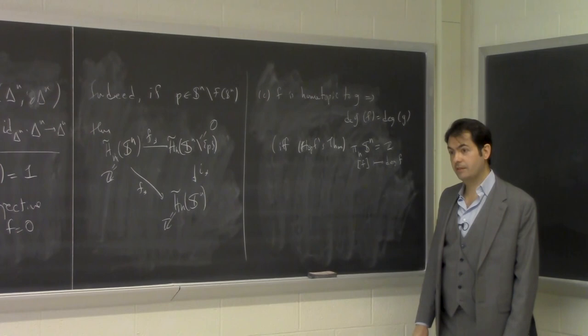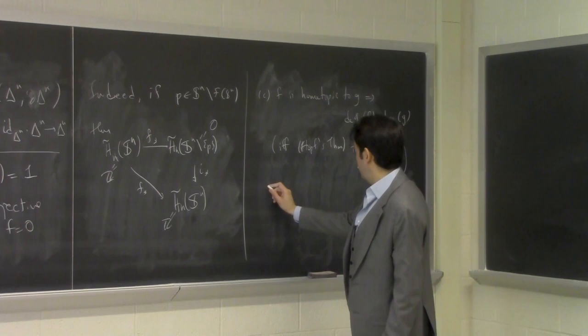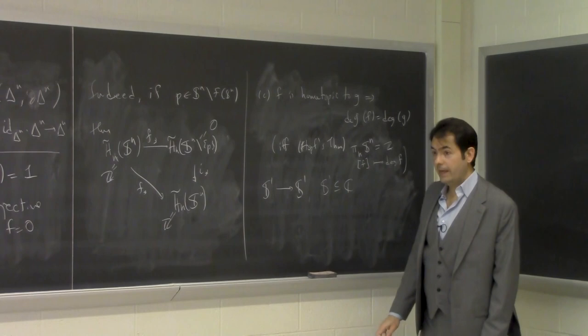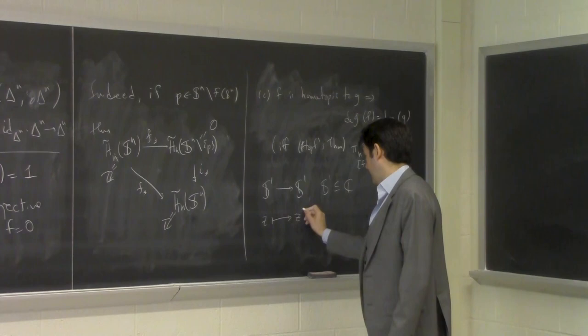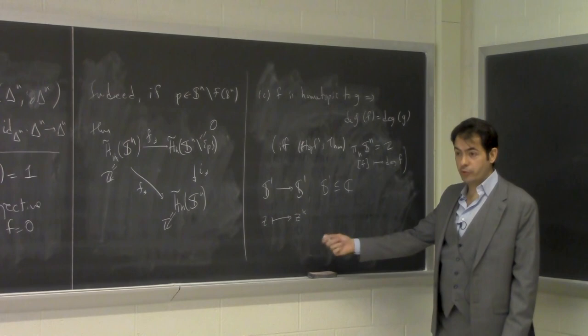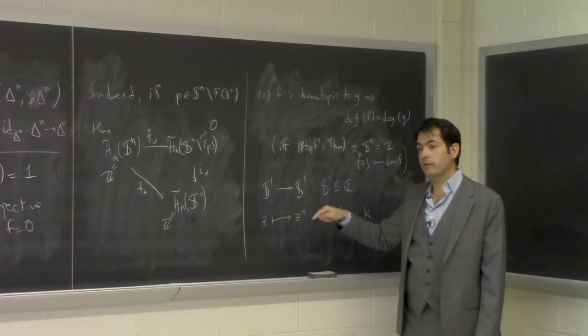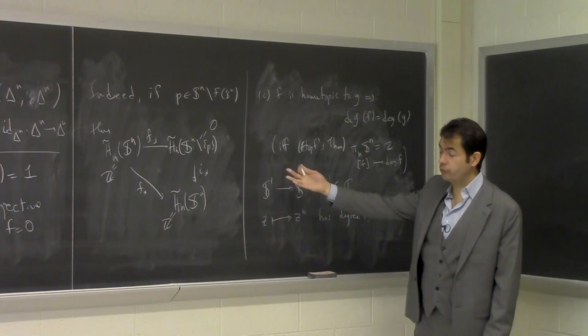A student requests an example. If we go from S^1 to S^1, viewing S^1 inside the complex numbers, the map c ↦ c^k has degree k. So you should think of the degree as telling you how many times you wrap around — this is clear for S^1 and also true for other spheres. The degree counts how many times the map wraps the sphere around the sphere, taking orientation into account.